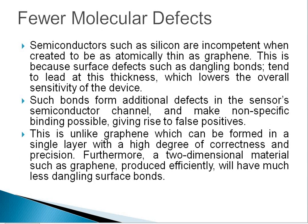Next, fewer molecular defects in graphene. Semiconductors such as silicon are problematic when created to be as atomically thin as graphene, because surface defects such as dangling bonds tend to appear at this thickness, which lowers the overall sensitivity of silicon devices. Such defects in the sensor's semiconductor channel make non-specific binding possible, giving rise to false positives. This is unlike graphene, which can be formed in a single layer with a high degree of correctness and precision. Furthermore, a two-dimensional material such as graphene, produced efficiently, will have much fewer dangling surface bonds.